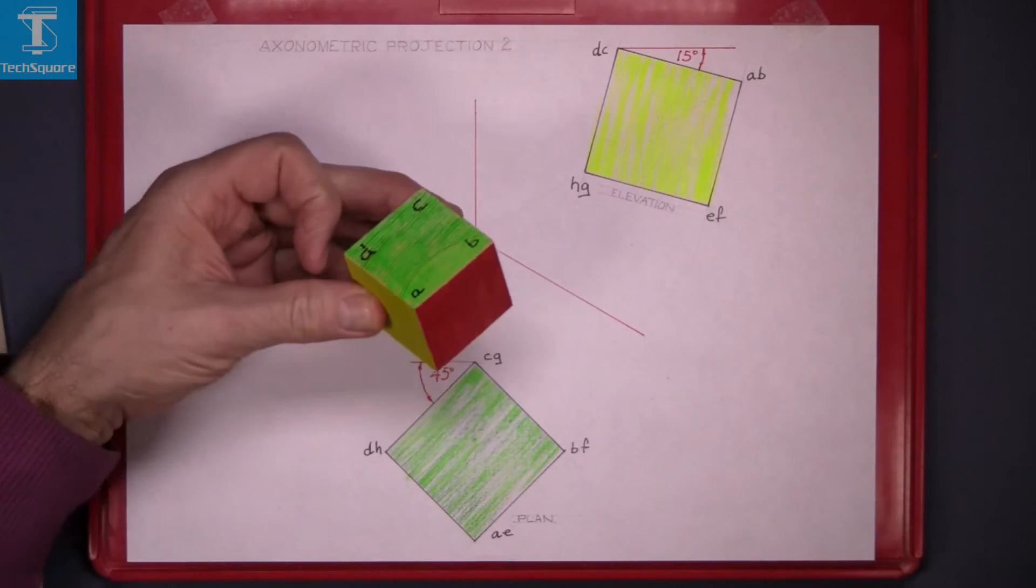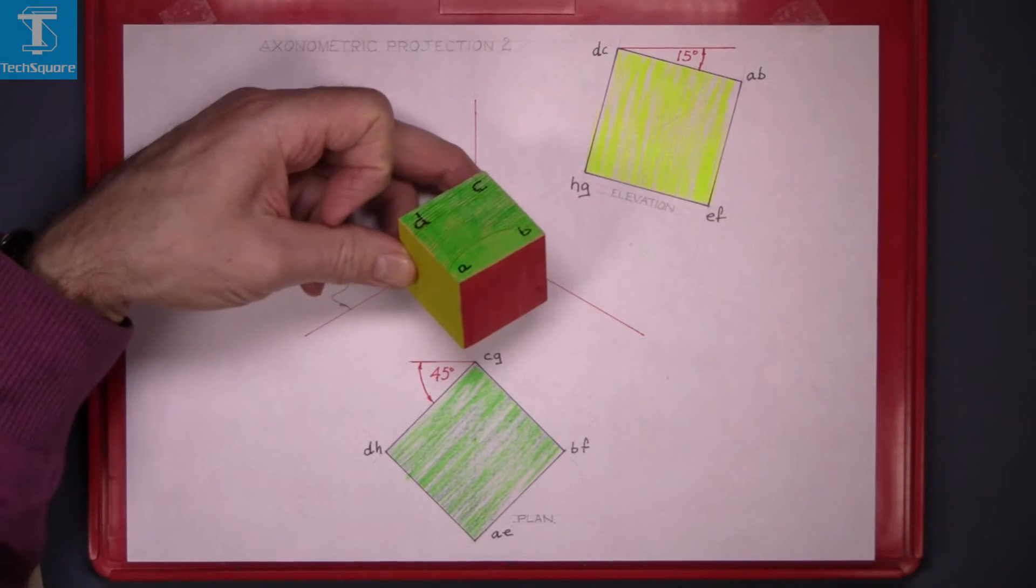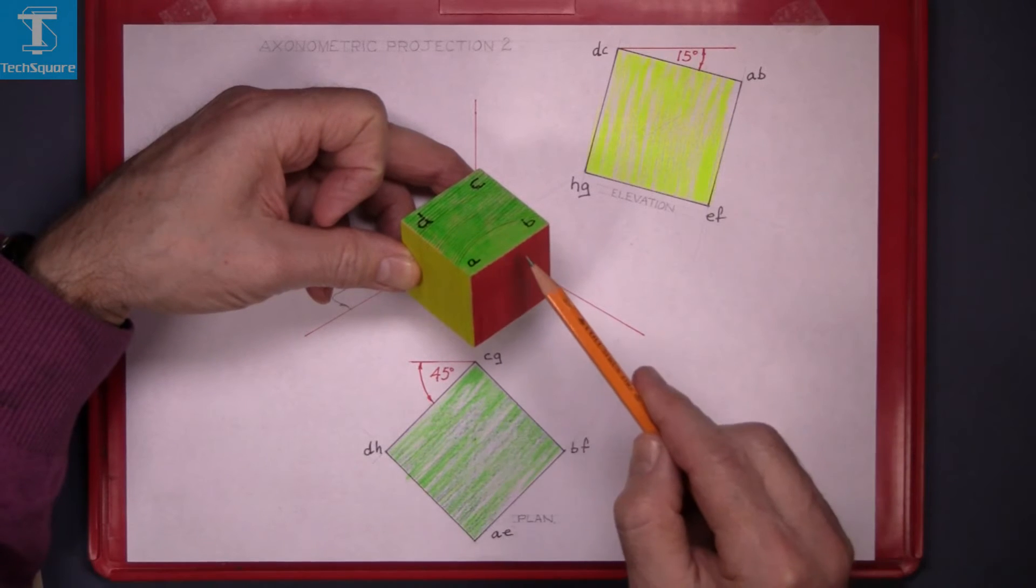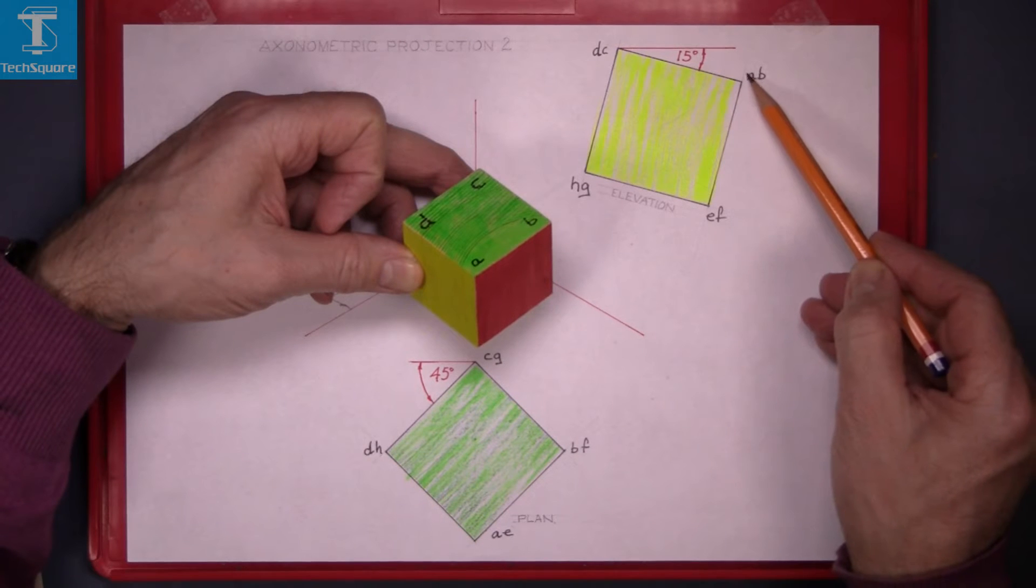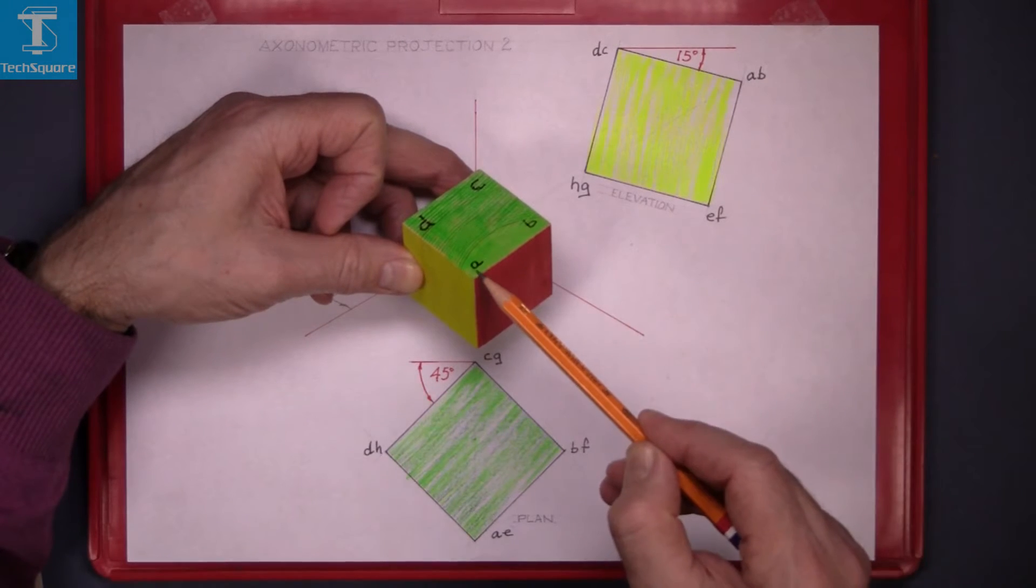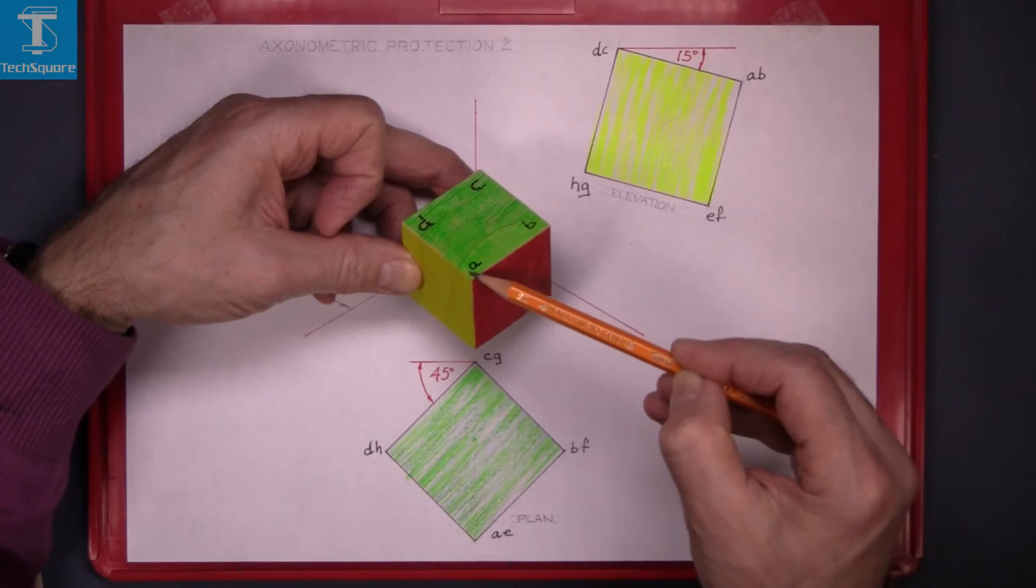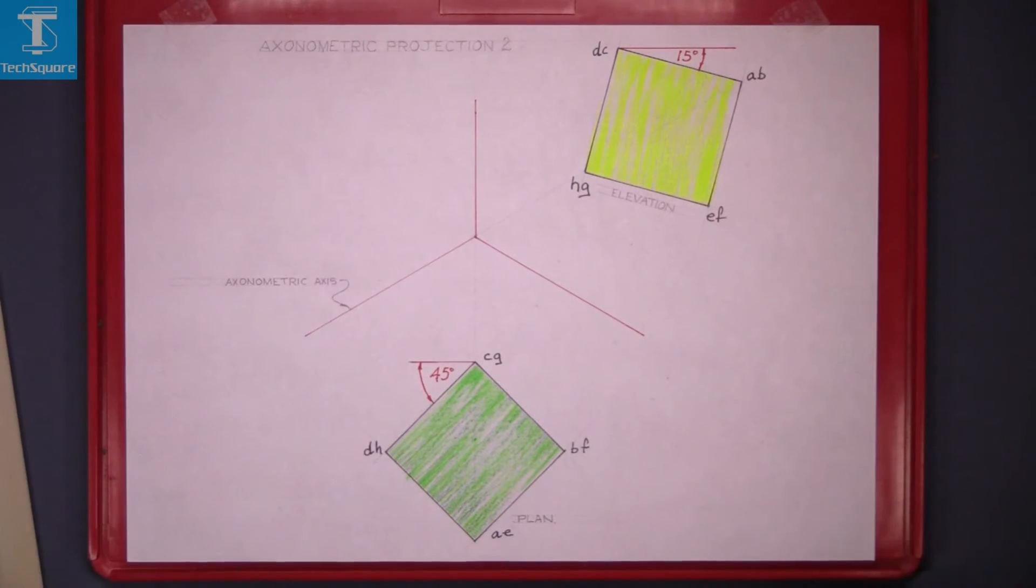What we are looking for is the isometric view and that's it there. Now point A is up here so brought in from the elevation and up from the plan gets you point A here.